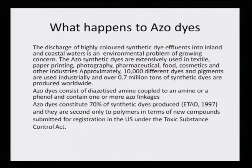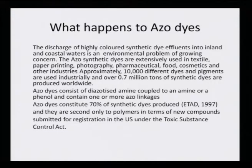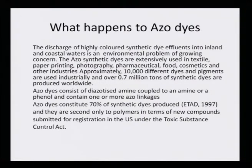Approximately 10,000 different dyes and pigments are used industrially, and over 0.7 million tons of synthetic dyes are produced worldwide. Azo dye consists of a diazotized amine coupled to an amine or a phenol, containing one or more azo linkages — meaning N=N double bond containing chromophore. Azo dyes constitute 70 percent of the synthetic dyes produced, and they are second only to polymers in terms of new compounds submitted for registration in the US under the Toxic Substance Control Act.